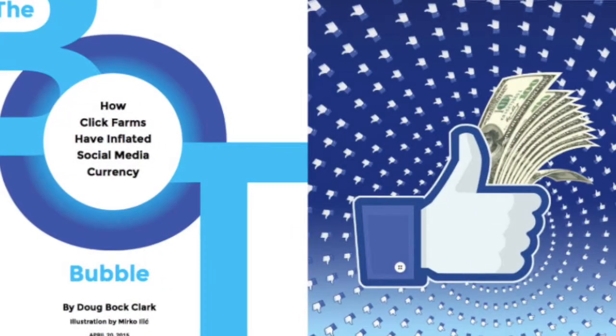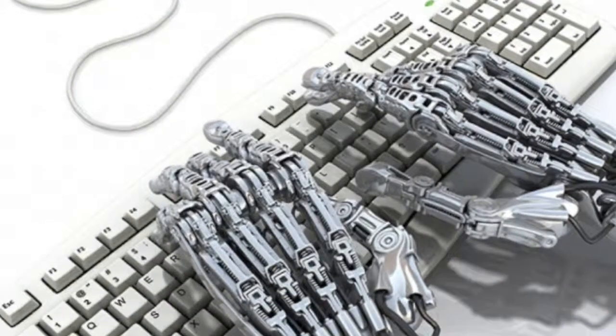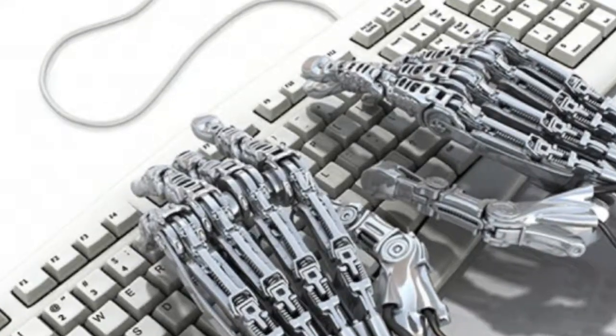Workers are paid on average one dollar for following a thousand Instagram accounts or a thousand Twitter accounts. Click farming is basically done in two ways: one, by hiring low-paid workers; and two, by making software with bot clicks. The software is designed to automatically follow your Instagram account, like your Facebook photos, or whatever you want — these are called bot clicks.